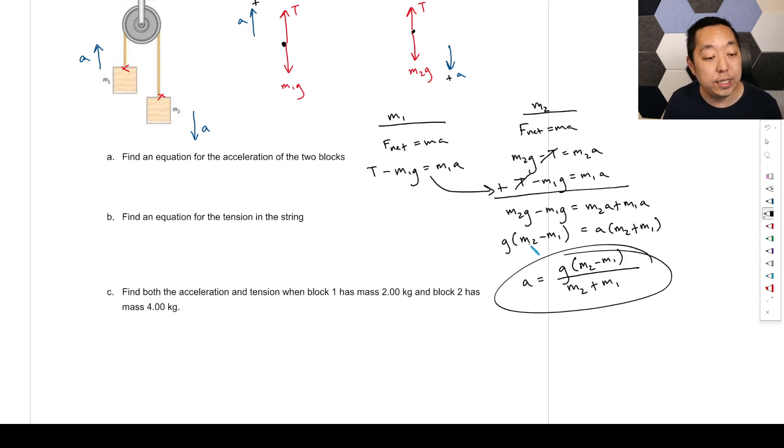So that's the acceleration. Now find an equation for the tension in the string. Well, you can use either of the equations, but we can use this one here. This is going to be tension equals M1A plus M1G. You can factor out the M1. It's going to be A plus G, and this is M1. We have the A right here, G M2 minus M1 over M2 plus M1 plus G, like that. So that's the tension in there. Don't have to simplify. It's not a math class. You just got to leave it like that.